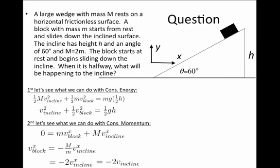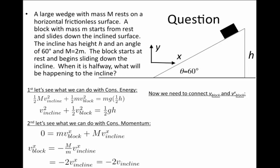We still have too many unknowns: the velocity of the block, the velocity of the incline, and the x-component of the velocity of the block. We need to relate the velocity of the block to its x-component. Since the block is moving down the incline at a 60-degree angle, the x-component of the block's velocity equals the magnitude of the velocity times cosine of 60 degrees times minus one, because it's traveling in the negative x direction. The cosine of 60 is one-half, so the x-component of the block's velocity is minus one-half times the block's velocity magnitude.